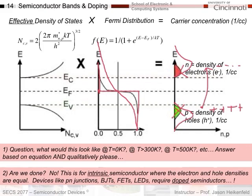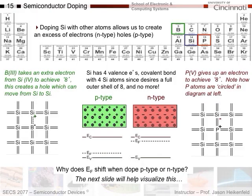We're not done yet, because this is for an intrinsic semiconductor where the electron and hole densities are equal. However, in all the devices in this course we require P-N junctions, where one material has more holes (P-type) and the other has more electrons (N-type). BJTs, FETs, and LEDs are all based on P-N junctions. So we need to alter the concentrations so they're not equal, and this requires doped semiconductors.